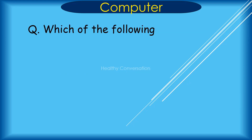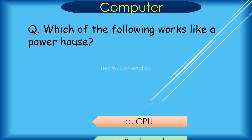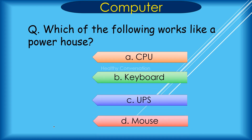Question: Which of the following works like a powerhouse? A. CPU, B. Keyboard, C. UPS, D. Mouse. Correct answer is C. UPS.